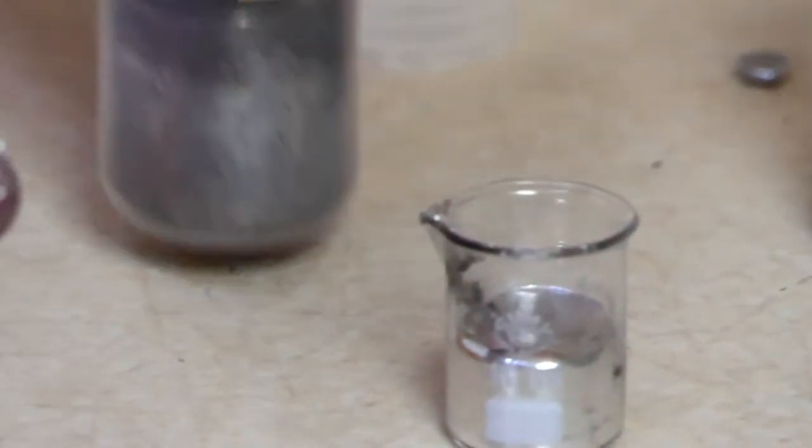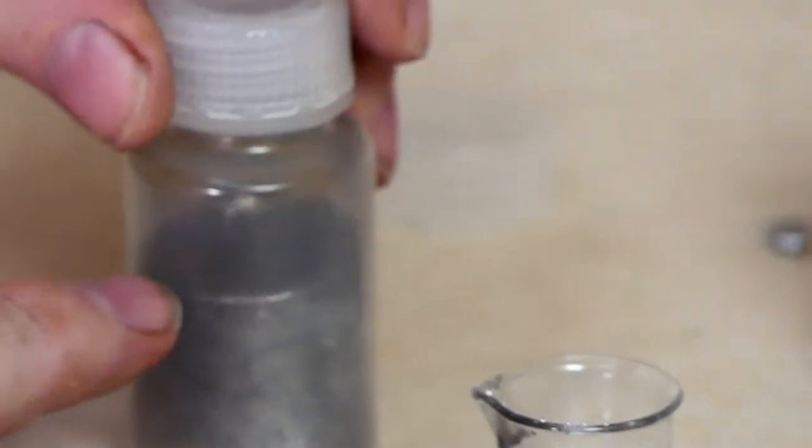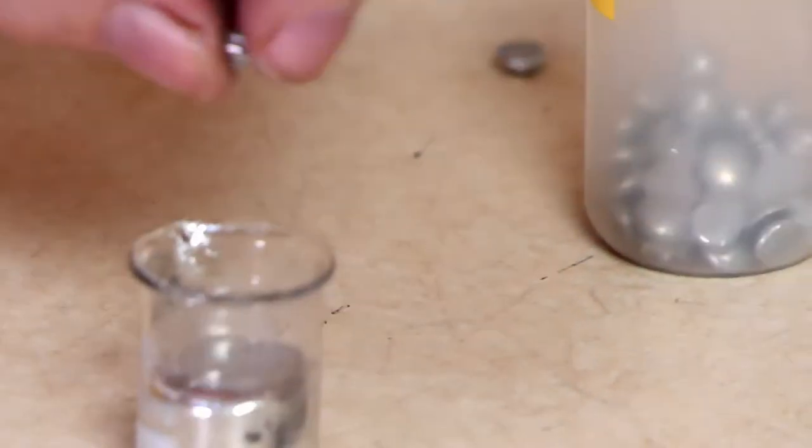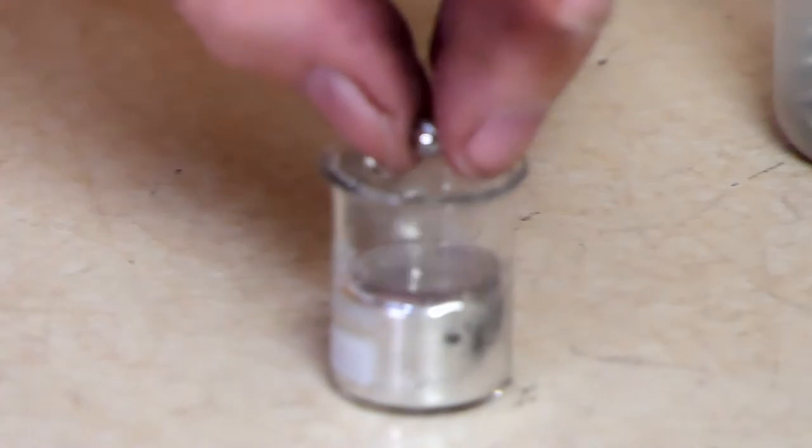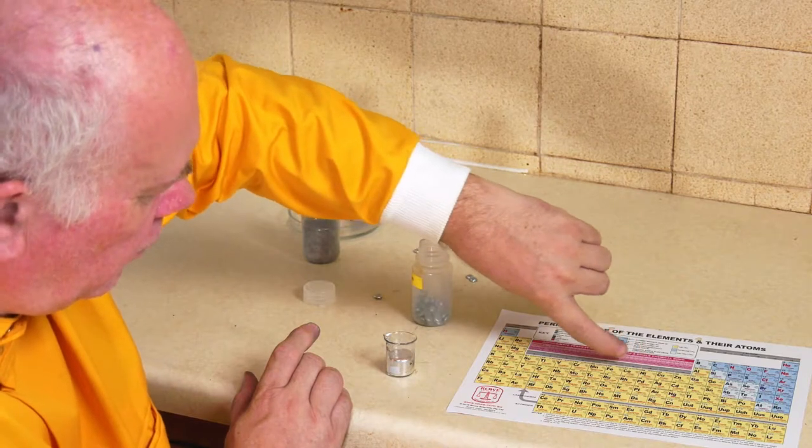With the mercury, the ball bearing will float in the mercury. If I take a ball bearing here, then do you think it's going to float or sink? It is in the periodic table just after iron.